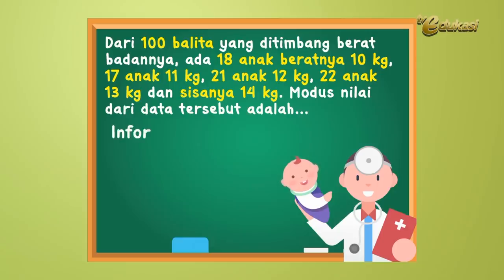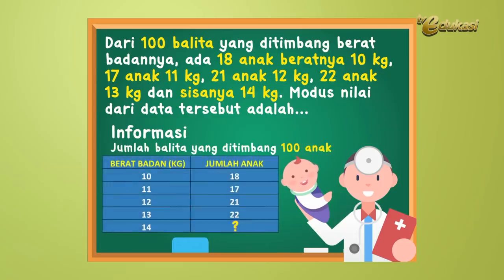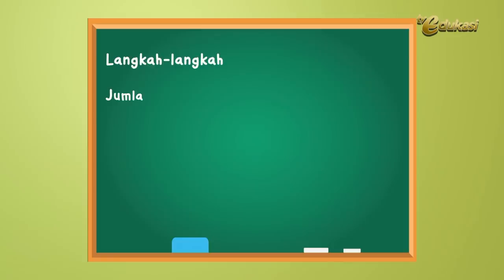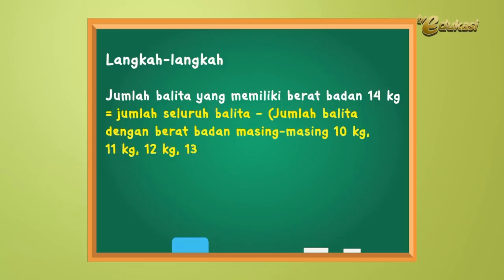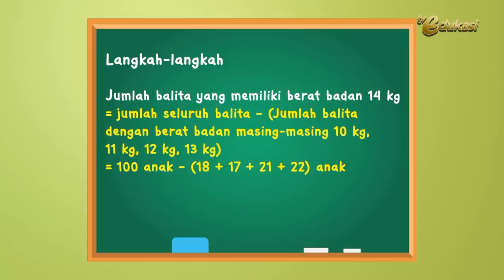Solusi. Informasinya: jumlah balita yang ditimbang 100 anak; 18 anak beratnya 10 kg, 17 anak beratnya 11 kg, 21 anak beratnya 12 kg, 22 anak beratnya 13 kg, sisanya 14 kg. Jumlah balita yang memiliki berat badan 14 kg sama dengan jumlah seluruh balita dikurangi jumlah balita dengan berat badan masing-masing 10 kg, 11 kg, 12 kg, dan 13 kg. Atau sama dengan 100 dikurangi (18 + 17 + 21 + 22) = 100 dikurangi 78 = 22 anak.